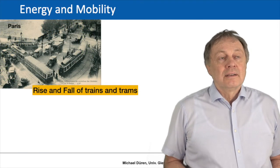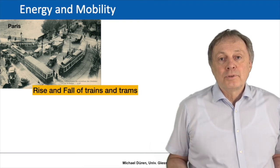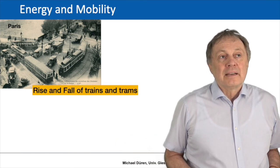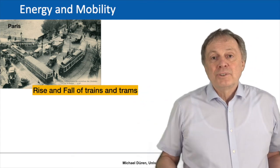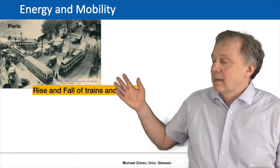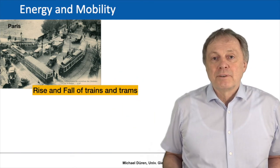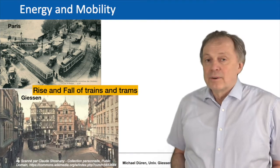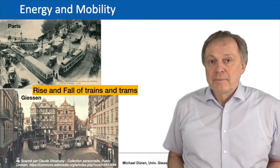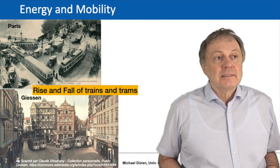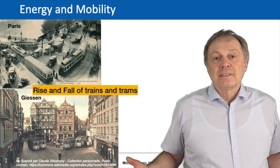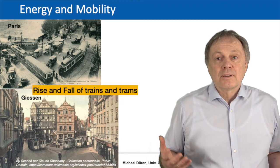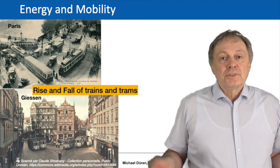Trams became common in many towns. At first they were pulled by horses or donkeys, and later, as electricity arrived, all trams became electric. A city with a huge tram network was Paris. You can see a traffic jam of four trams trying to cross one intersection. Even a small town like Gießen had trams — four tram wagons at the Gießen marketplace, going from the station to the town center and suburbs.